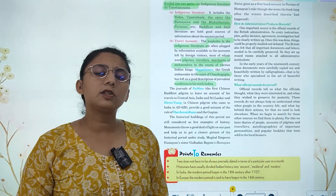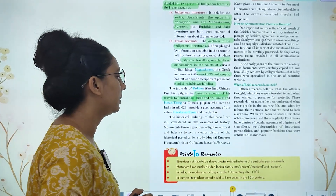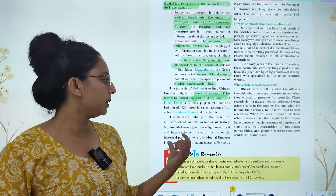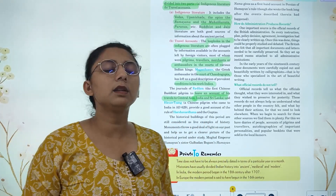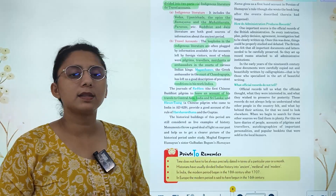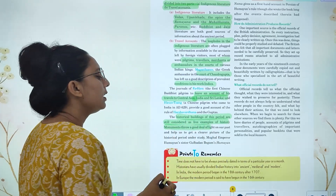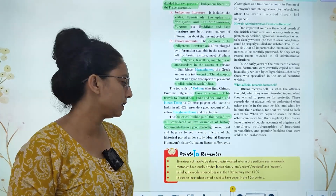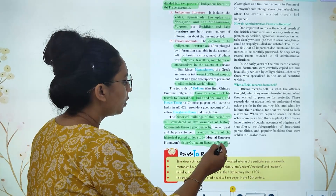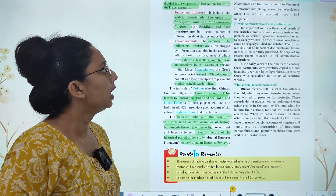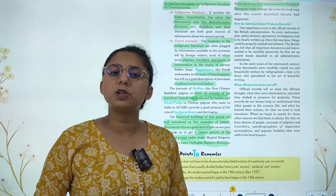There is also a Chinese traveler whose name is Faxian, who left accounts from Central Asia, India, and Sri Lanka. Then there is Xuanzang, also a Chinese pilgrim, who wrote about Harsha's rule. Monuments tell us about great deeds and give us a clearer picture of the historical period. Bana was the sister of Harsha, and his accounts give us firsthand information about Harsha.